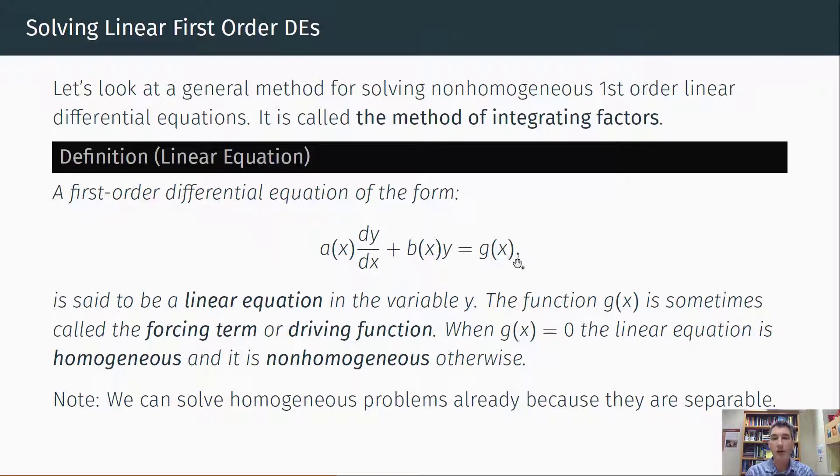This g(x) on the right-hand side is sometimes called the forcing term or the driving function. In modeling, it often corresponds to some sort of external force. The left-hand side is often relating to, at least in physical systems, to some physical laws, like Newton's second law or something like that.